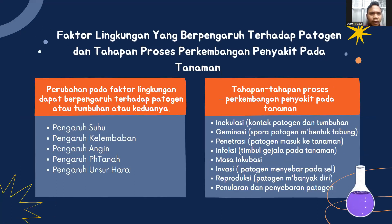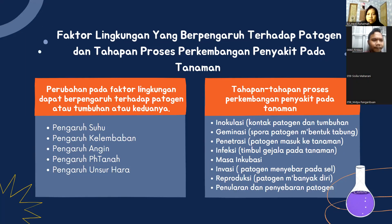Faktor lingkungan yang berpengaruh terhadap patogen dan tahapan proses perkembangan penyakit pada tanaman. Perubahan pada faktor lingkungan dapat berpengaruh terhadap patogen atau tumbuhan atau keduanya. Faktor-faktor tersebut adalah: yang pertama pengaruh suhu, yang kedua pengaruh kelembapan, yang ketiga pengaruh angin, yang keempat pengaruh pH tanah, dan yang kelima pengaruh unsur hara.